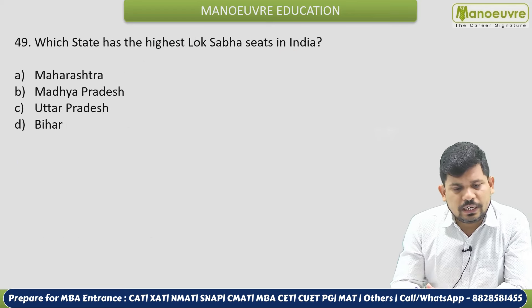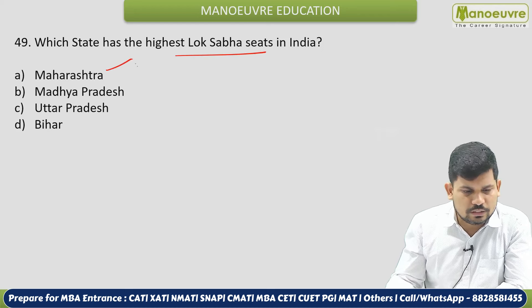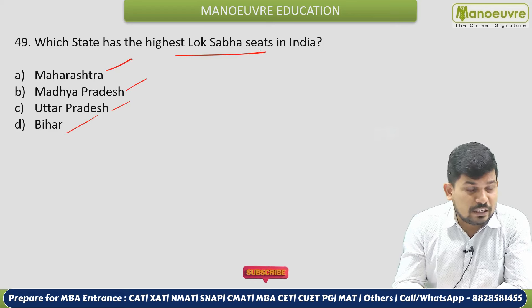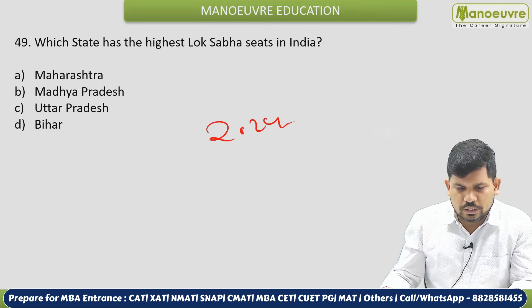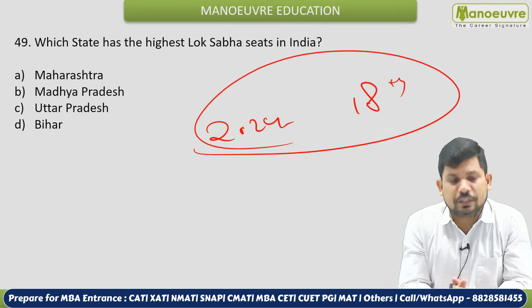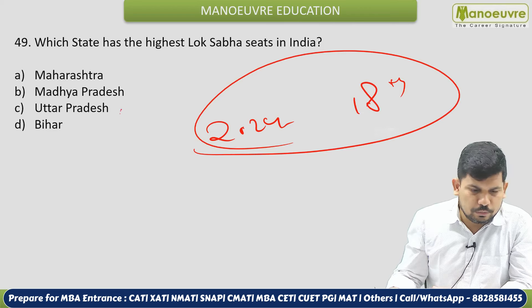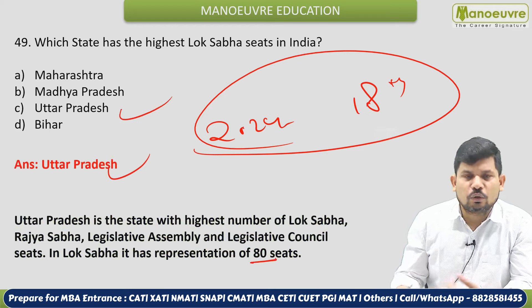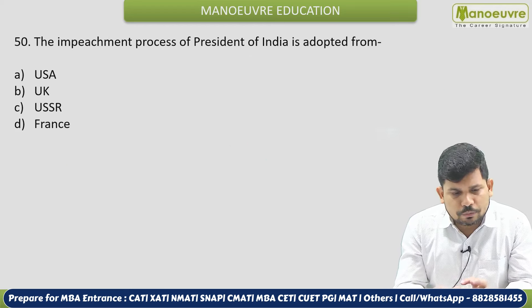Next: Which state has the highest number of Lok Sabha seats in India? Options: Maharashtra, Madhya Pradesh, Uttar Pradesh, Bihar. The correct answer is Uttar Pradesh with 80 seats. This is the 18th Lok Sabha election and this question is expected in the exam based on current trends — Uttar Pradesh has the highest number of Lok Sabha seats at 80.